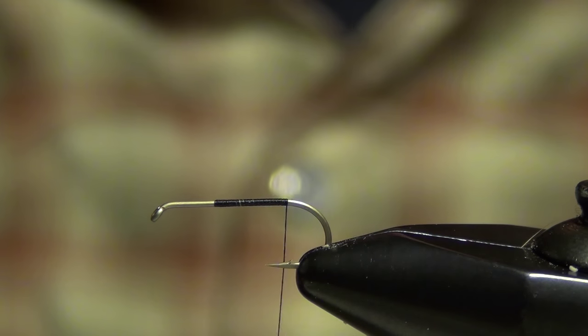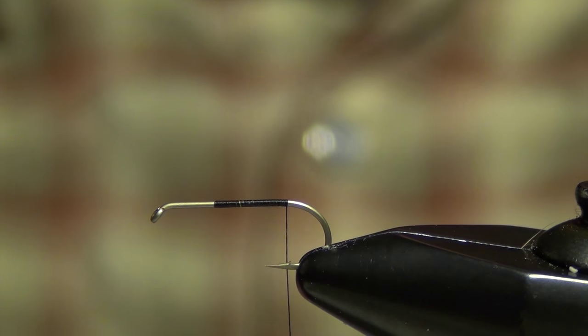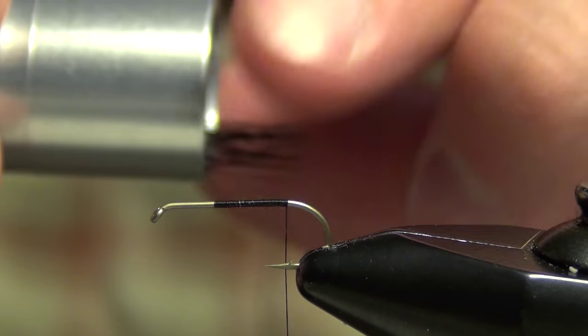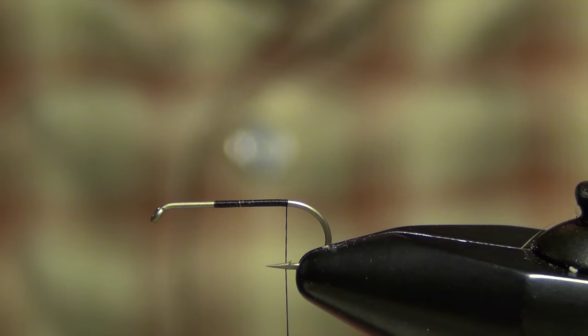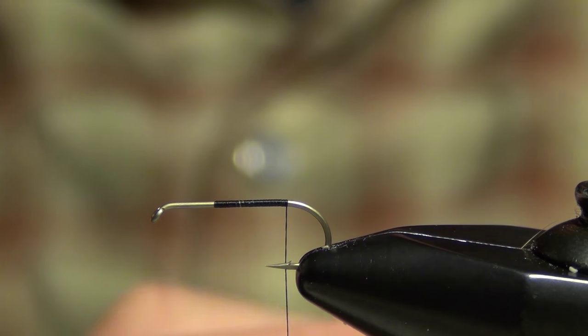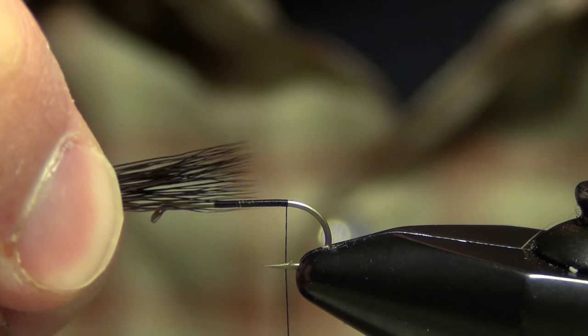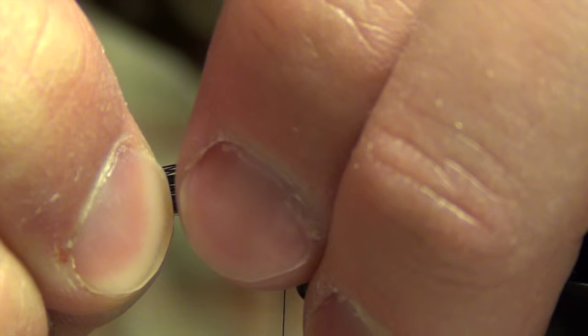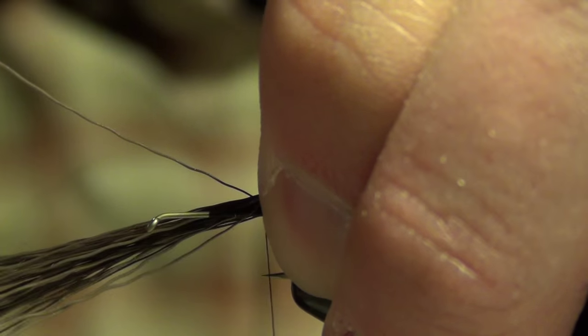I'm going to use some Uni ADOT black thread and then some black moose body hair for the tail. I'm going to put it in a stacker just to even up the tips. I want the tail to be about half of the length of the body, not full length. So I just put it on the shank, pinch off the halfway point, and then I'm tying it in there.